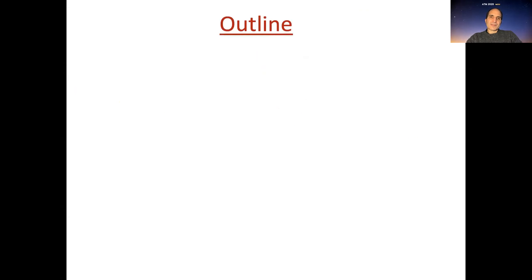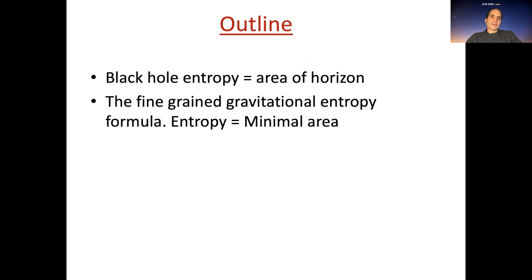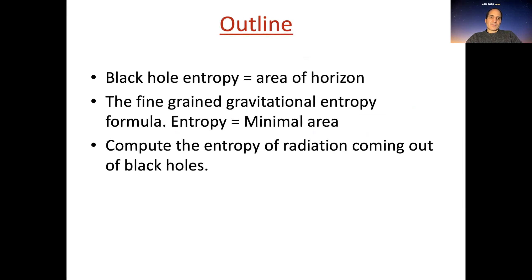The outline of this talk is the following. First, we'll remind you of the concept of black hole entropy and how it's equal to the area of the horizon. Then we'll discuss a certain concept called the fine-grained gravitational entropy formula, which says that the fine-grained entropy is equal to a certain minimal area. We'll review and explain that formula, and then apply it to the computation of the entropy of radiation coming out of black holes.